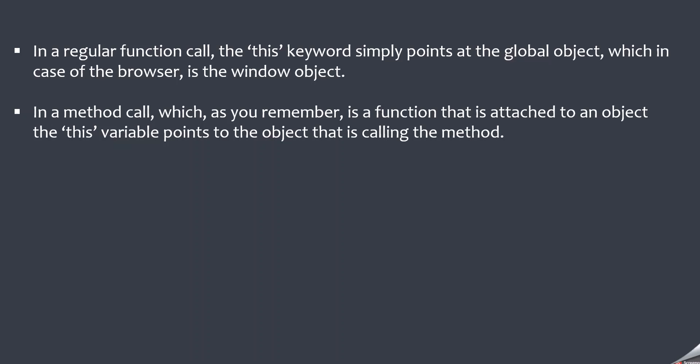A method is a function attached to an object. So when you make a method call, that method will be called on some object, and this variable inside that method will point to that object. These are the two rules for determining the value of this variable. If you remember these two rules, you will never get confused about what the value of this variable should be.